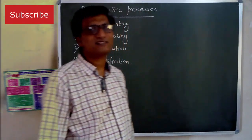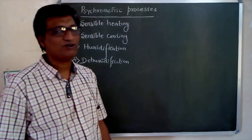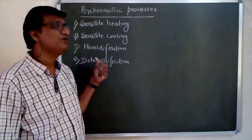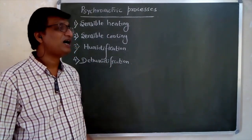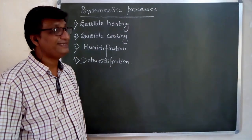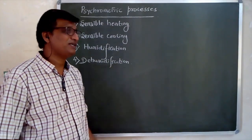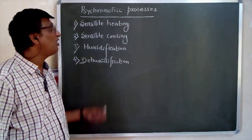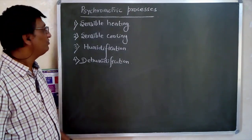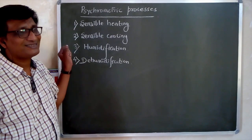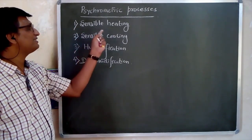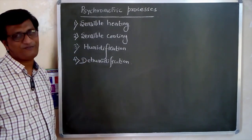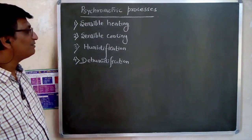Hello friends, welcome to my YouTube channel 3SwamijiN Academy. Today we are going to learn about some of the psychrometric processes. In the earlier video, I showed you how to locate a point on a psychrometric chart, what a psychrometric chart is, how to use it, how it is drawn, and where the properties can be located. Now today we will see some of the processes on the psychrometric chart: sensible heating, sensible cooling, humidification, and dehumidification. Let us start with the sensible heating process.